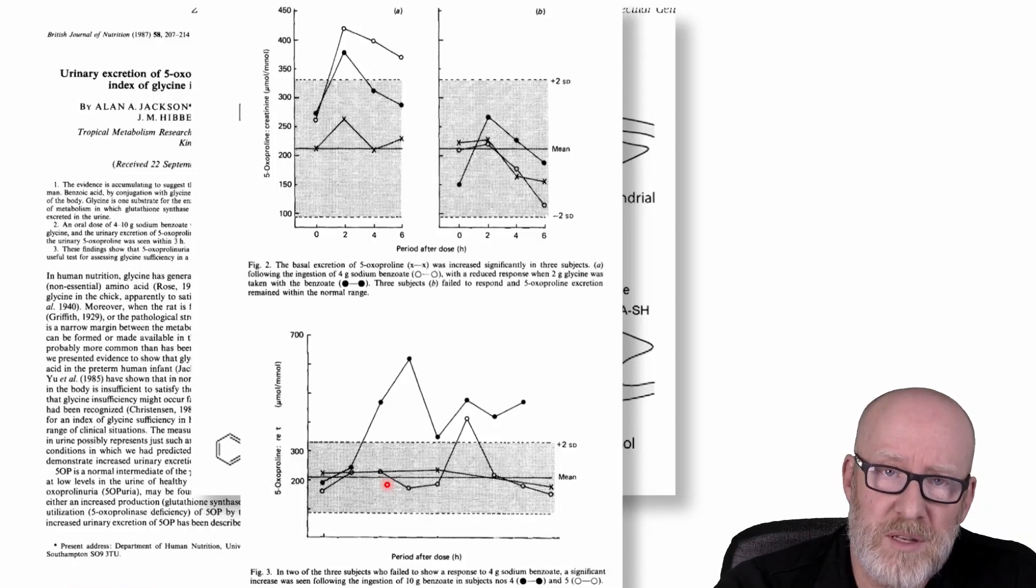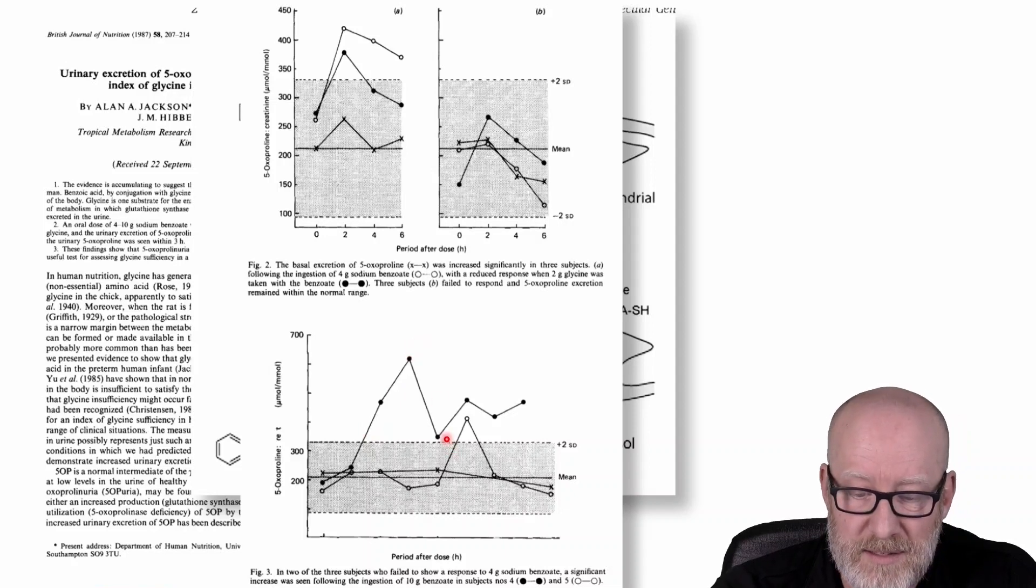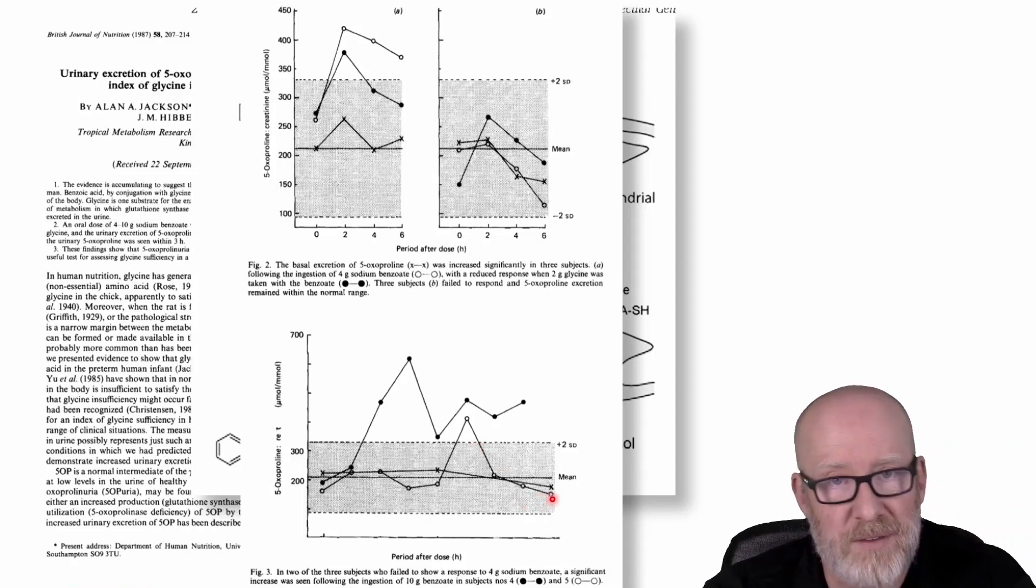Over here down at this bottom one, when the four grams didn't work, they bumped it up and they gave him 10 grams. So 10 grams in this person definitely worked. And you can see, but then it started to come back down. This person, this X, didn't have any, they don't respond to sodium benzoate for some reason. And then this person here, again, a response, but quite a bit later. But notice that it ends up coming back down to baseline after a number of hours.